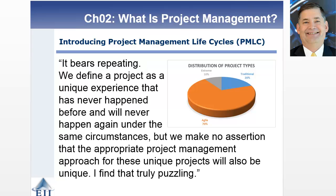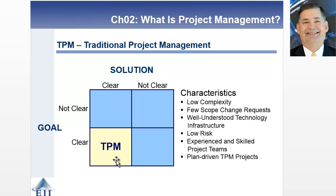The book notes that all projects are different, and you've got to treat them as such. Looking at traditional project management specifically — in quadrant 1 — the characteristics include low complexity, clear goal and solution, few changes in requirements, very few scope changes expected, well-understood technology infrastructure, low risk, many experienced and skilled project teams, and it is very much a plan-driven project.